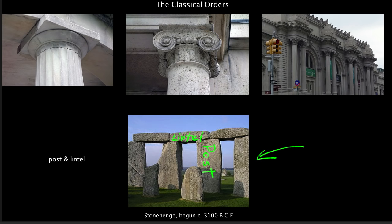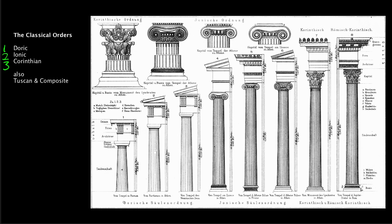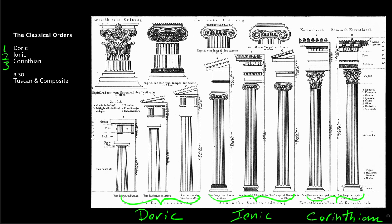The posts are the vertical elements and they support a horizontal element called a lintel. We still use this basic system when we nail two-by-fours together, and that's what the Greeks were doing — but in a much more sophisticated way. They developed decorative systems, and that's what we're referring to when we use the term classical orders. There are three basic orders: the Doric, the Ionic, and the Corinthian, plus the Tuscan and the Composite.